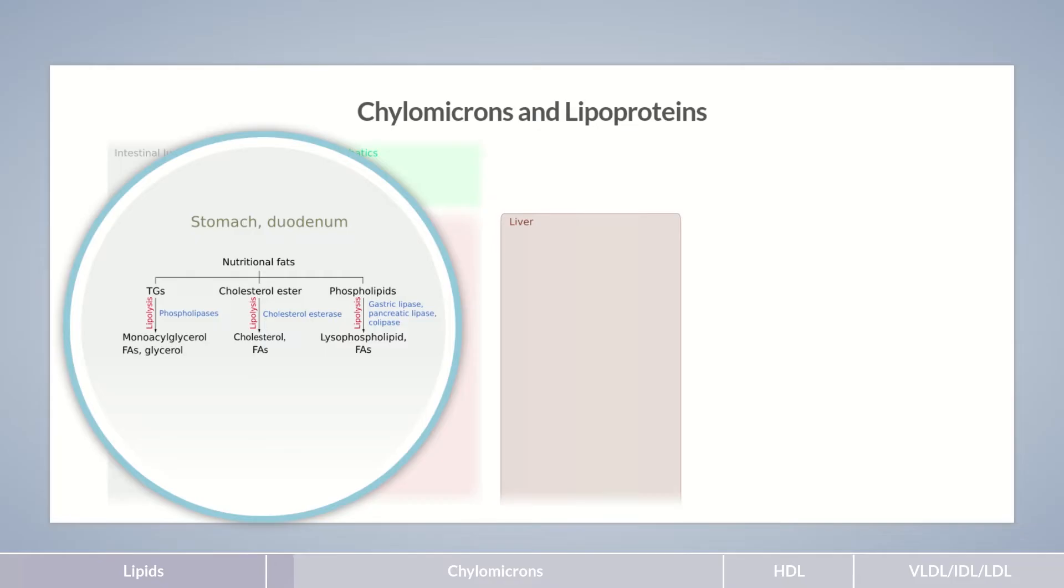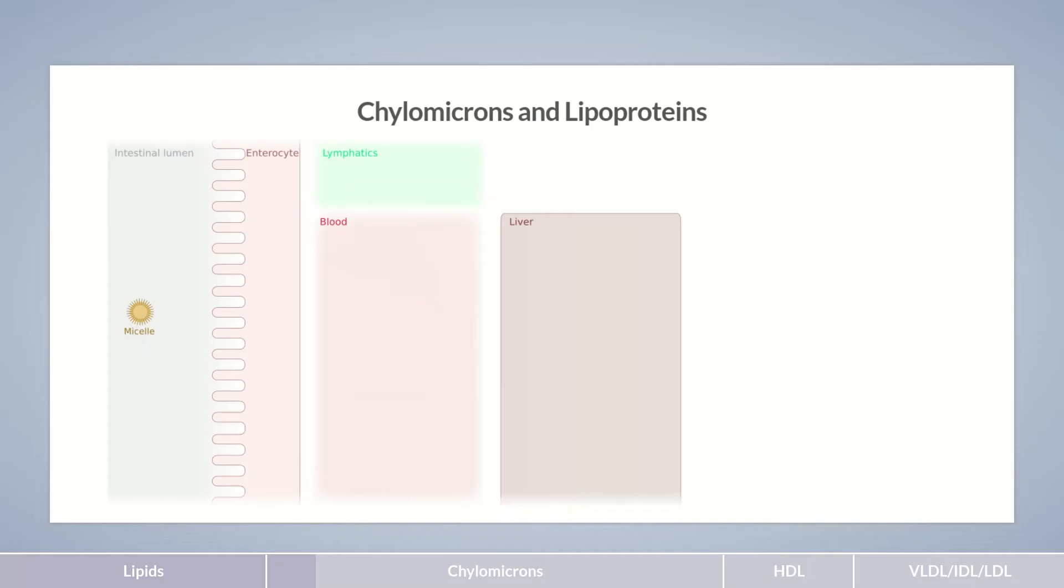Afterward, lipids form mixed micelles, together with bile acids and fat-soluble vitamins. In the small intestine, these micelles migrate to the membrane of the epithelial cells, termed enterocytes, where they disintegrate again. The enterocyte membrane consists largely of lipids, so most dietary fats can passively diffuse through it.